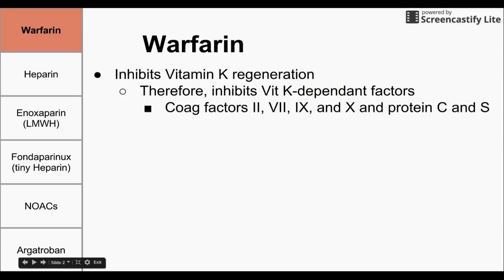We're first going to talk about warfarin. Warfarin is by far the oldest of the drugs we're going to be talking about. Warfarin is an inhibitor of vitamin K regeneration. Vitamin K is required to make some coagulation factors, such as factors 2, 7, 9, and 10. Vitamin K is also required to make protein C and S, which have an anticoagulative effect on the coagulation cascade. Applying warfarin inhibits vitamin K regeneration, which prevents the making of all of these coagulation factors and proteins.